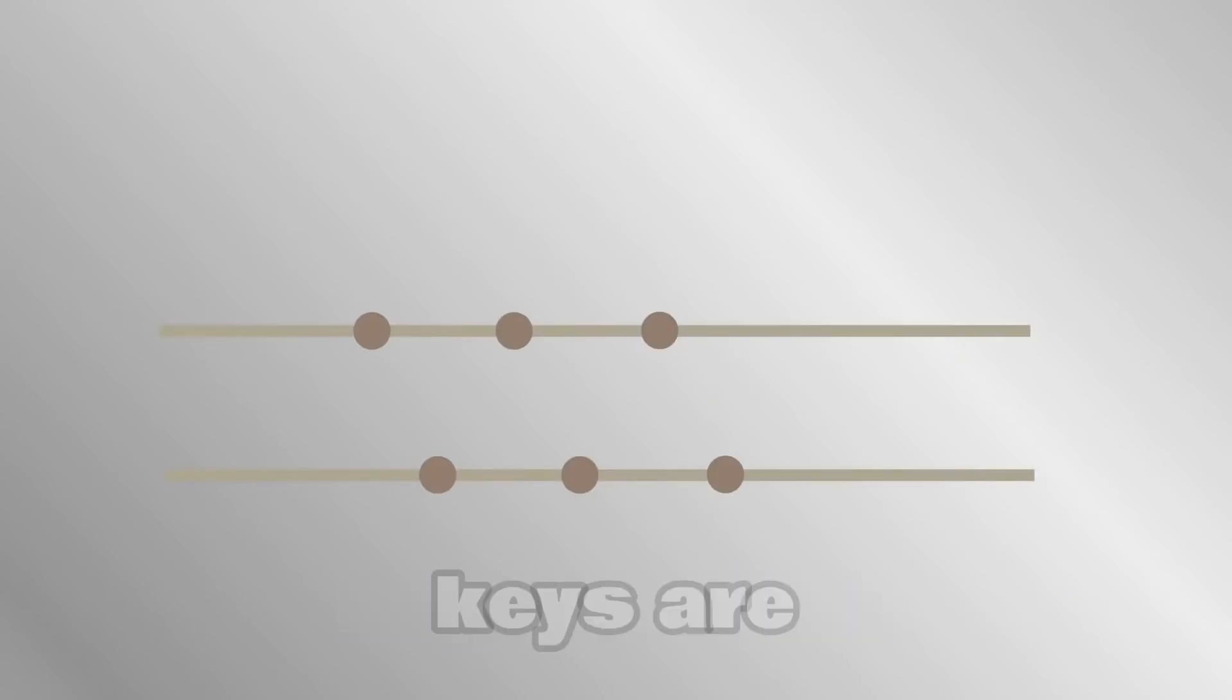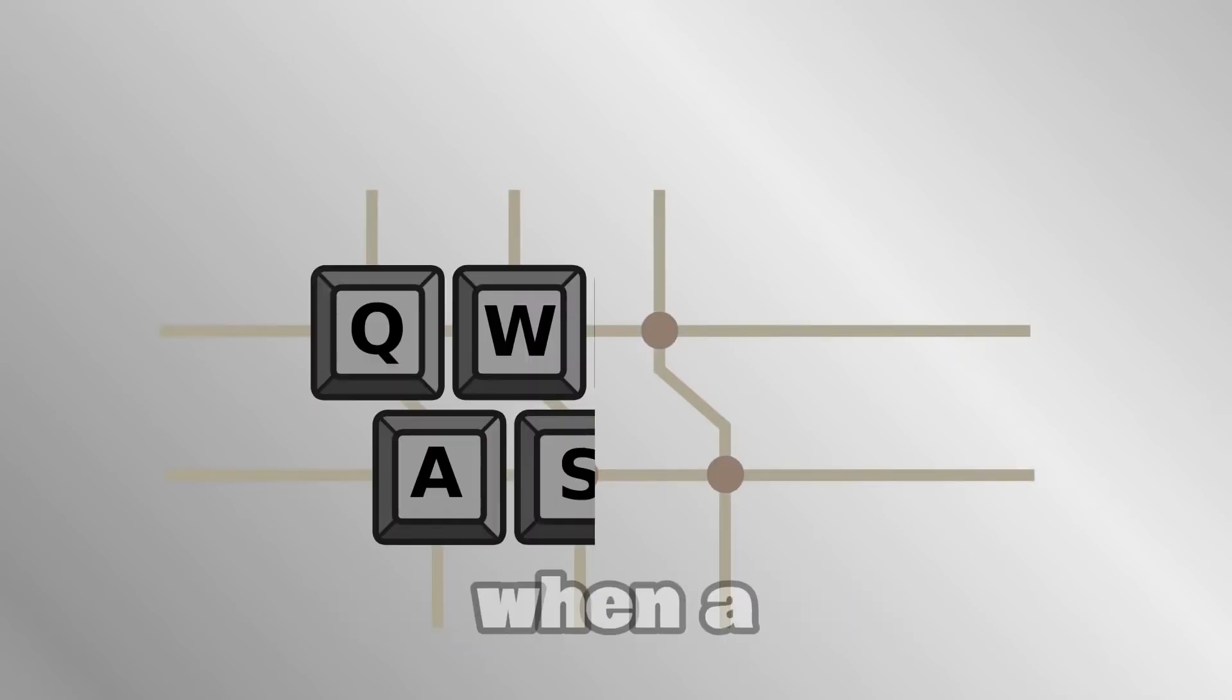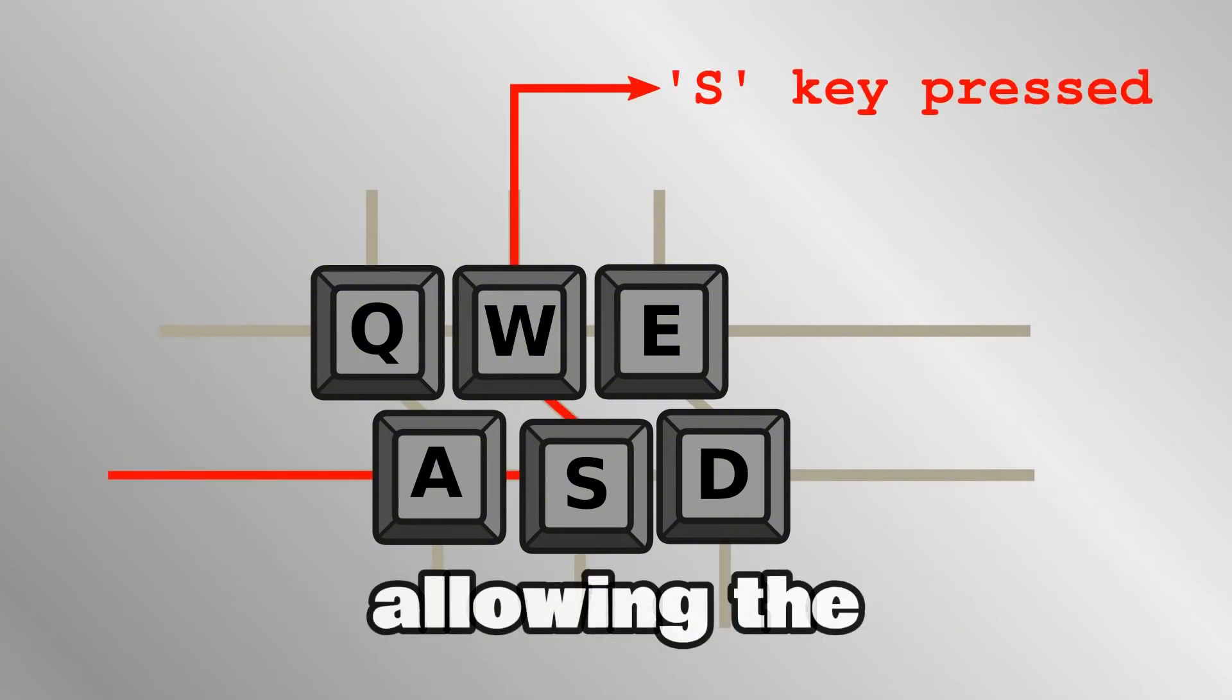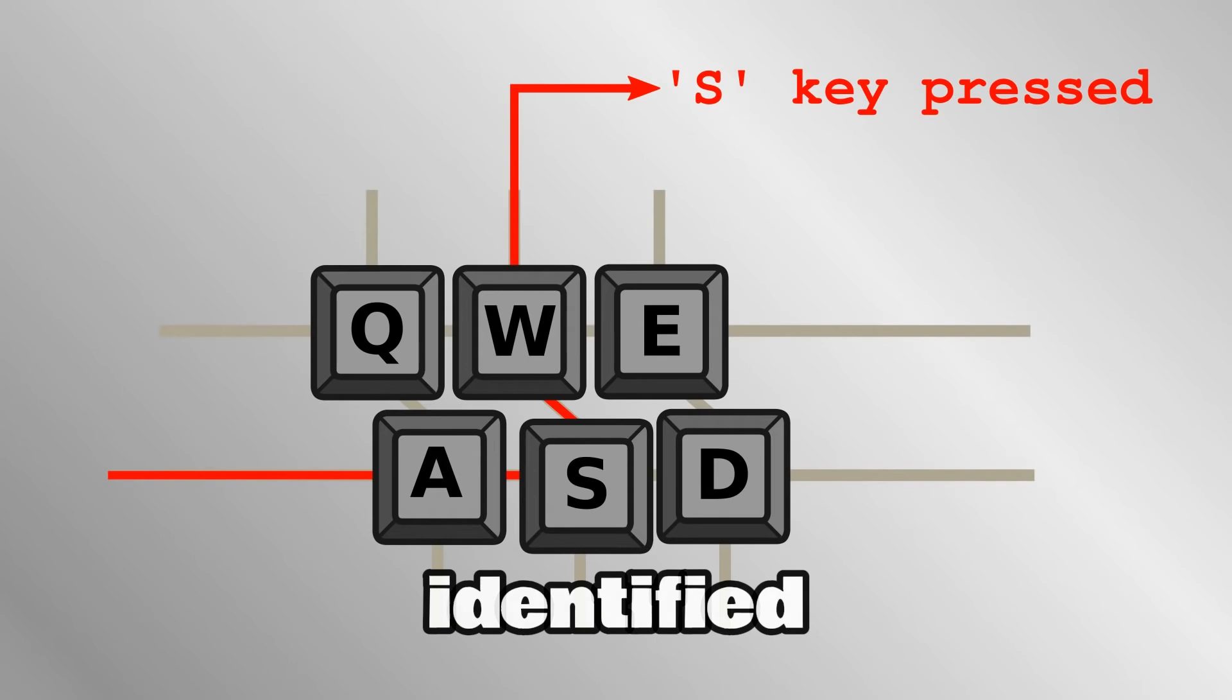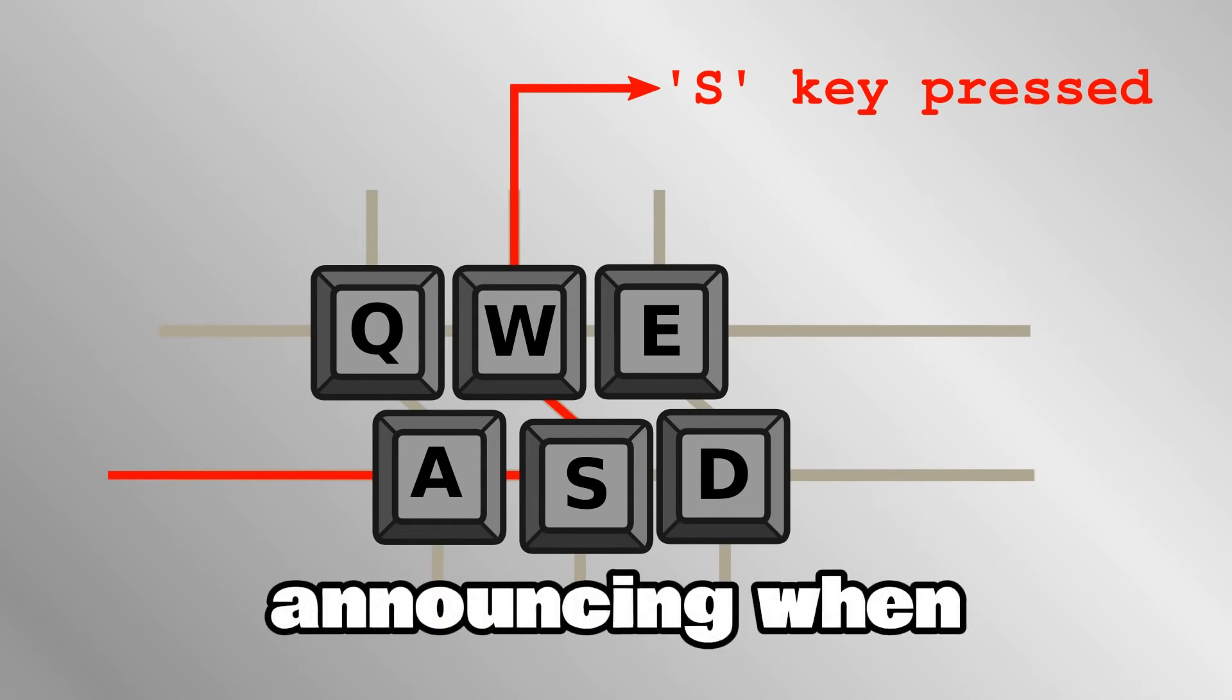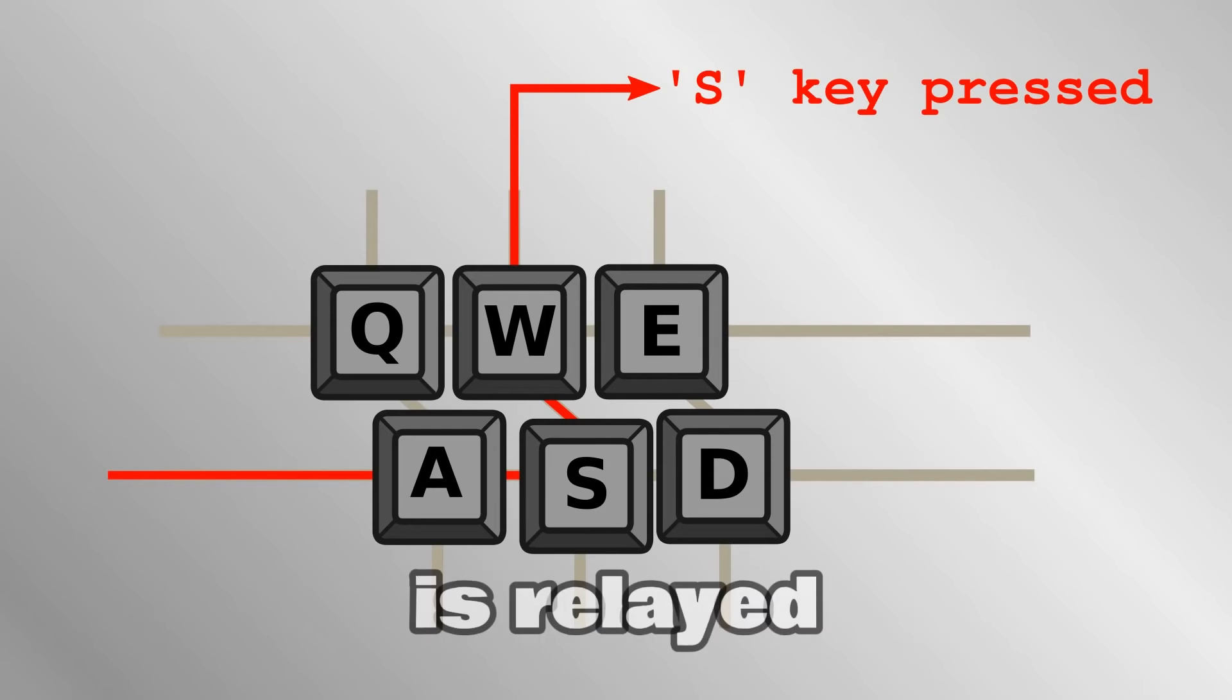On a keyboard, the keys are arranged into a grid. When a key is pressed, it makes an electrical contact between a horizontal and vertical row, allowing the precise key to be identified. Between the keyboard and the computer's motherboard, the message announcing when a key is pressed down or released is relayed to computer memory, allowing the computer to act on it.